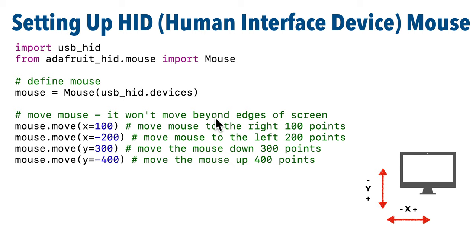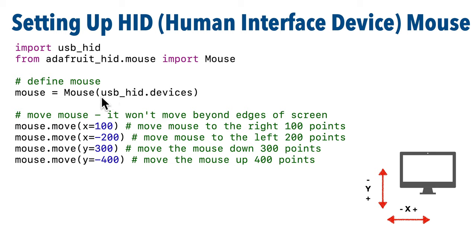As we learned previously, HID stands for Human Interface Device, and the HID libraries allow us to use CircuitPython to mimic keyboards, which you've done in the prior video, and mice, which we'll mimic now. To work with mouse HID we need to import usb_hid just as we did before, and also import from adafruit_hid.mouse import Mouse. Then we create a mouse object from the Mouse class, passing in usb_hid.devices, which is predefined inside the USB HID library. You'll use these three lines anytime you want to set up CircuitPython for mouse work.